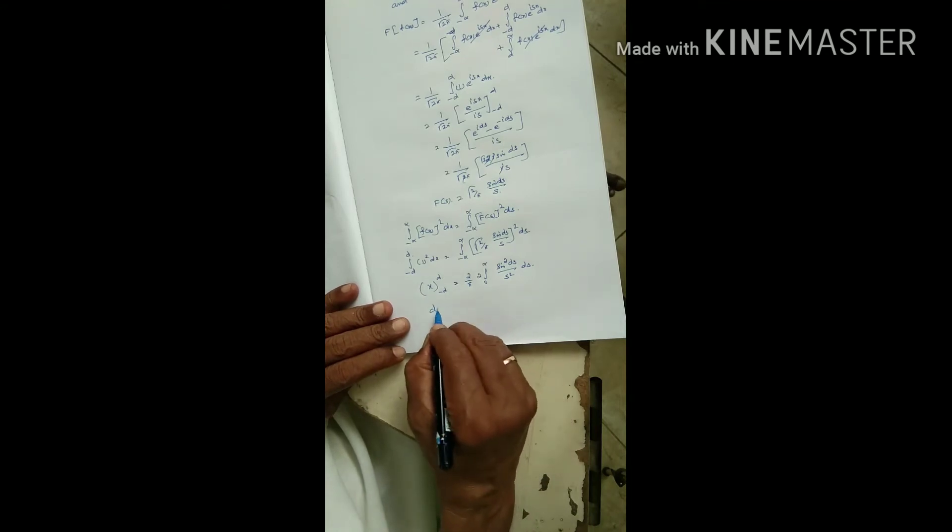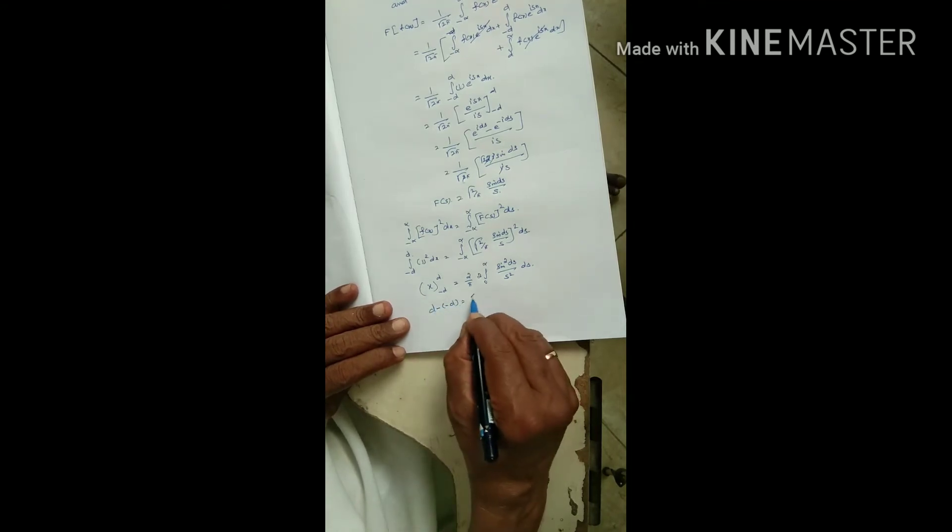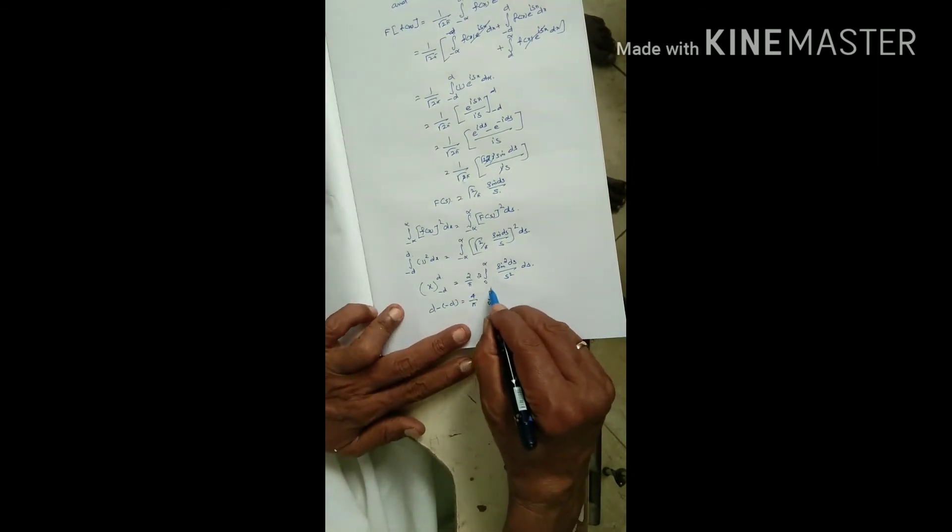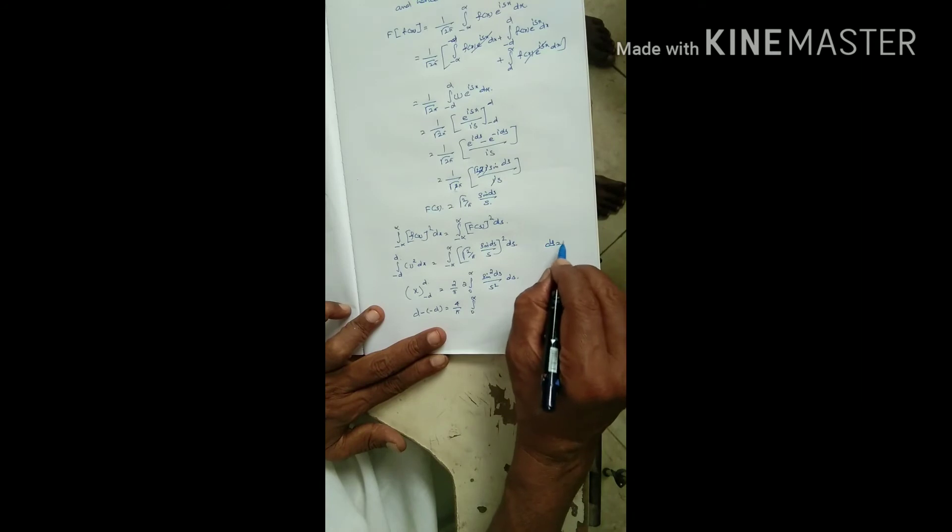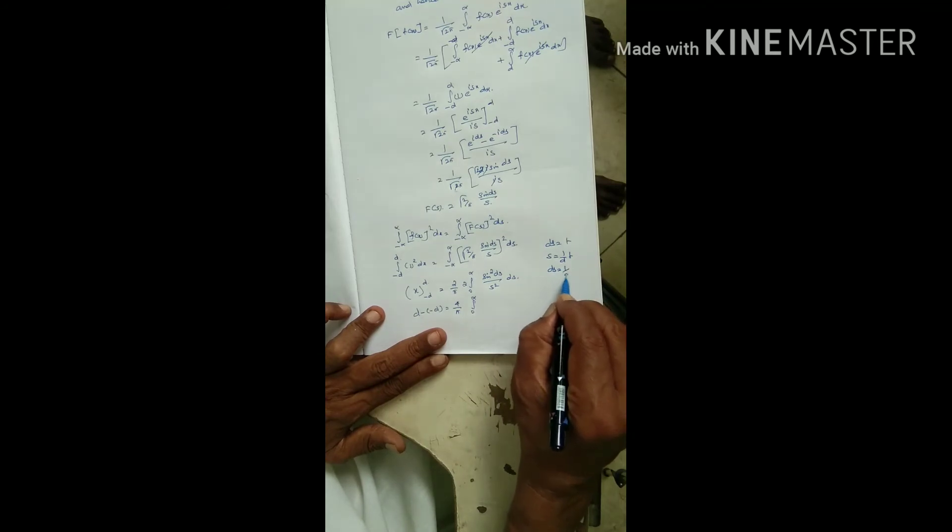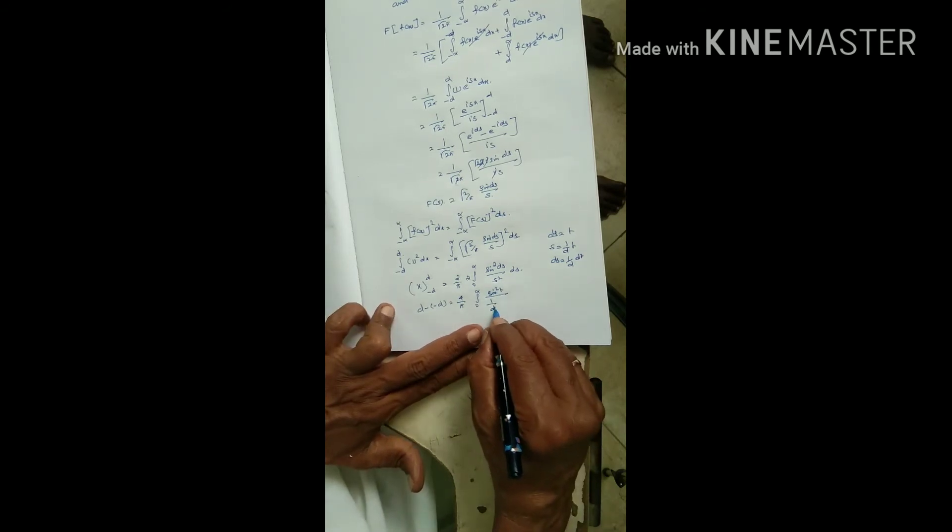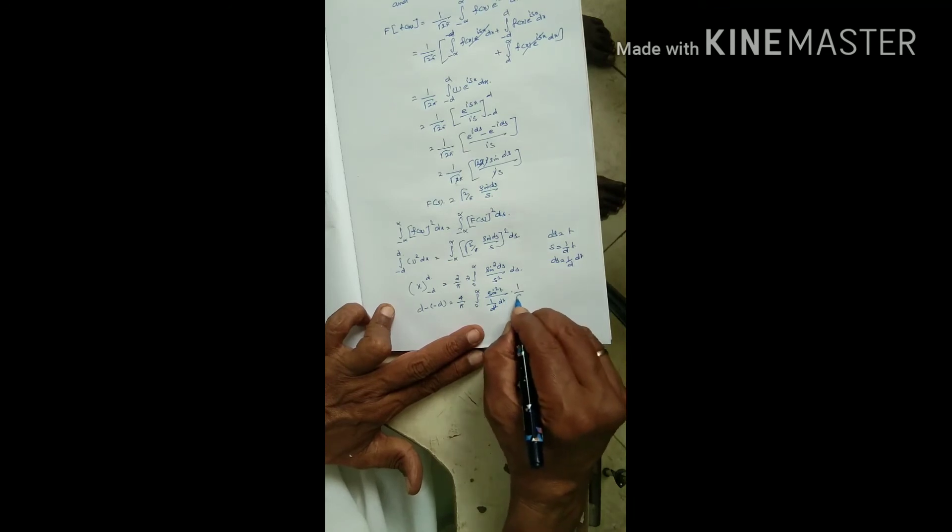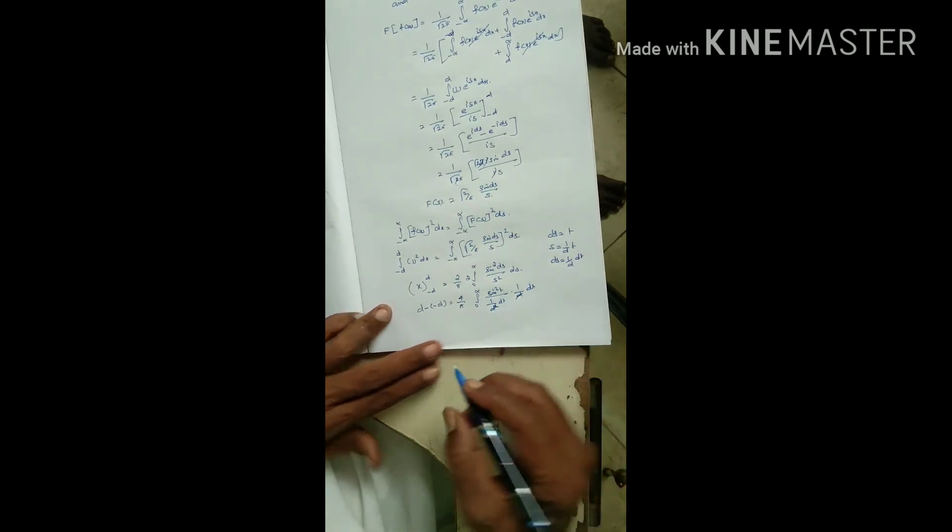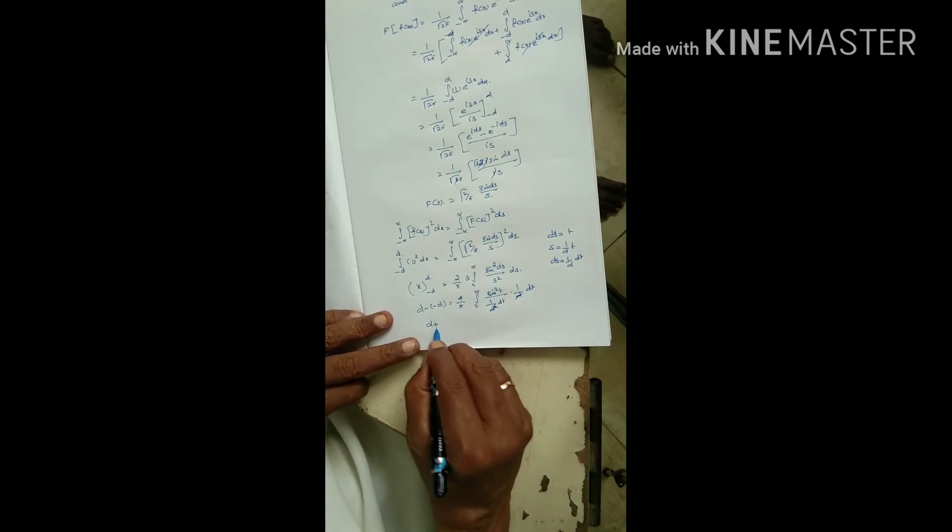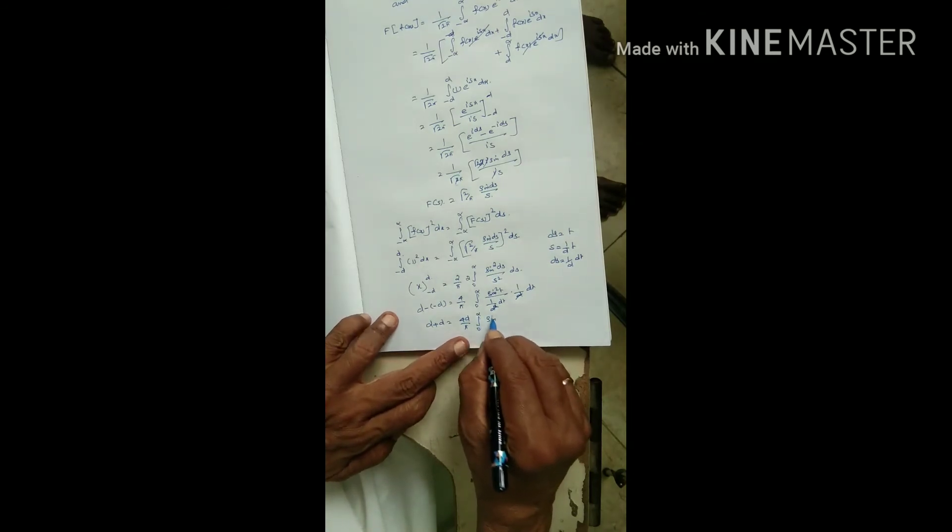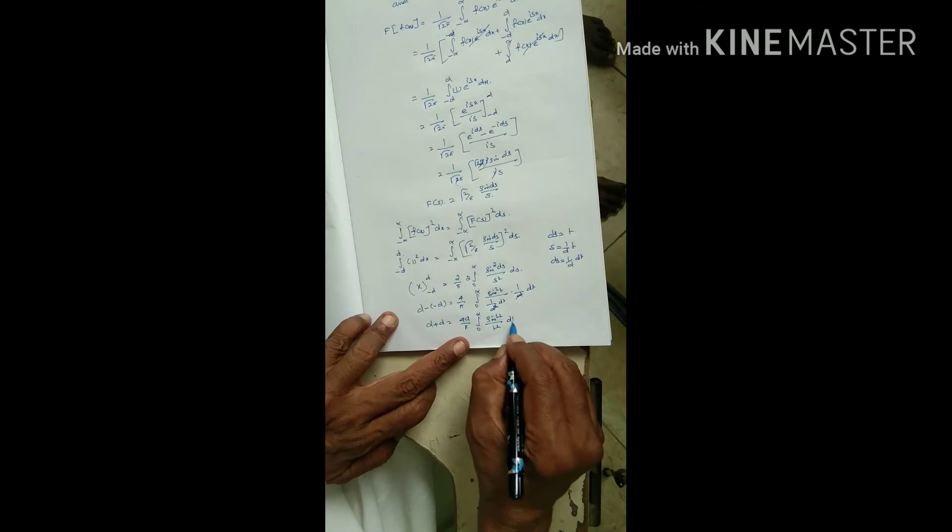Substituting s equals 1 by d times t, ds equals 1 by d dt. This gives sin square t by t square times d. After cancellation, 4d by pi integral 0 to infinity sin square t by t square dt.